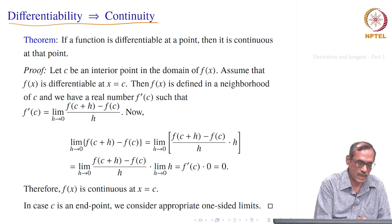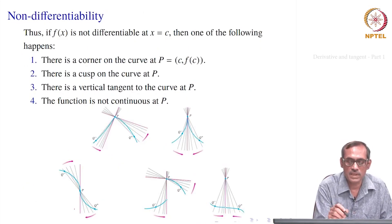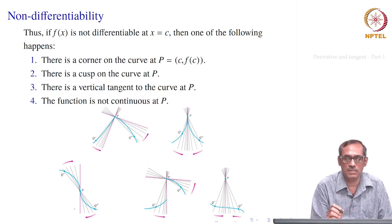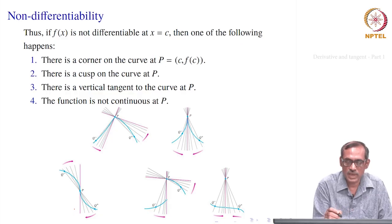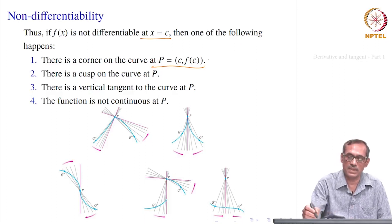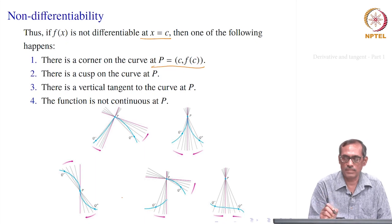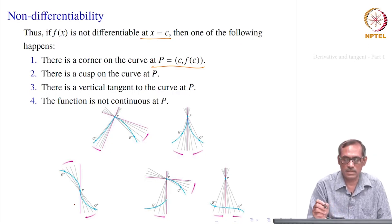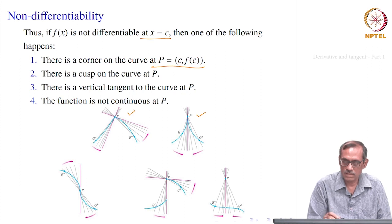When a function is not differentiable at x = c, there are geometric cases. There can be a corner on the curve at that point — as in y = |x|, where there is a corner at x = 0. Or there can be a cusp, as in y = x^(2/3), where the curve has a cusp-type feature.